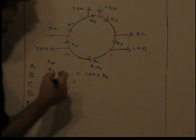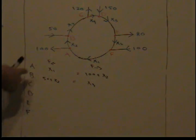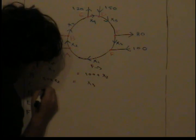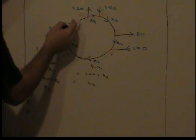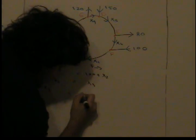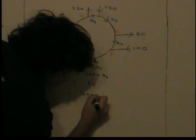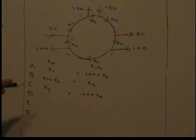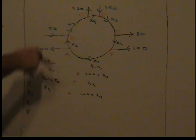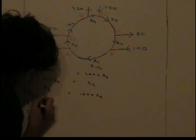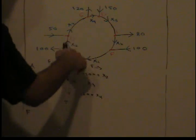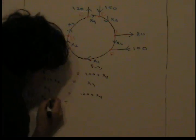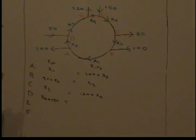Node C: what flows into node C looks like x3. For node D, what flows into D looks like x4 plus 150. x4 plus 150 equals what flows out of node D, which looks like just x5.